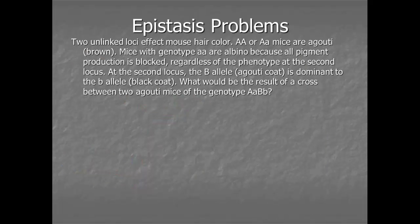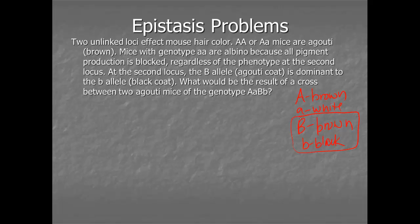Two unlinked loci affect mouse hair color. Big A or big A / little A mice are agouti or brown, and little A, little A mice are albino because color production is blocked regardless of the phenotype of the second locus. So in our key: big A is brown and little A is a white mouse. The second locus: the big B allele is dominant to little B allele, so agouti or brown is dominant to black. The on/off switch is the A gene — any mouse with little A, little A, no matter what the other letters are, is going to be white. If they have a big A, that's the on switch and they can have color.